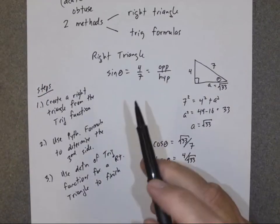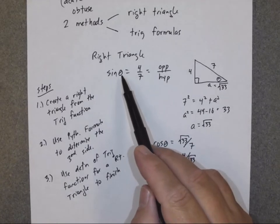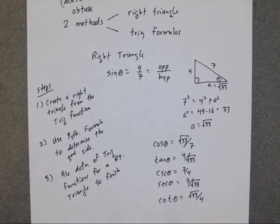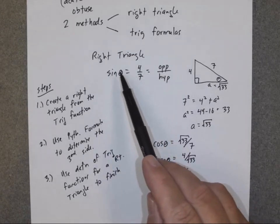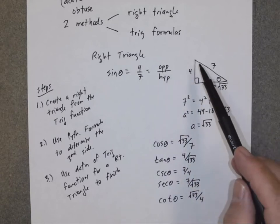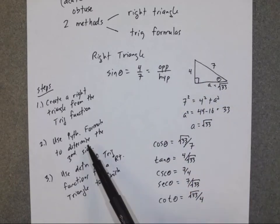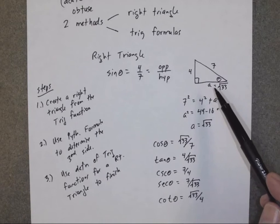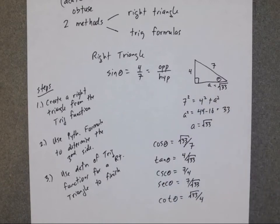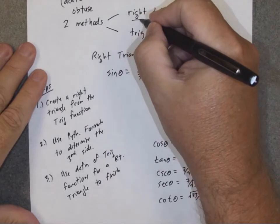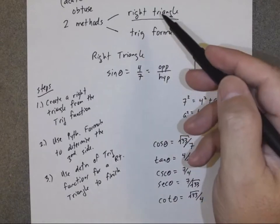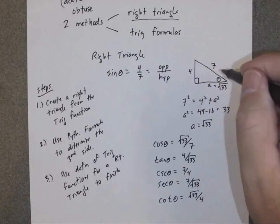Reviewing quickly: we were given an acute angle theta where sine of theta was 4 over 7, and we were to find the rest of the trig functions. Based on the definition of sine, we created a right triangle and filled in two of the sides. Then we used the Pythagorean formula to find the third side. Once we had all three sides of the triangle, we applied all the definitions of the trig functions. This is the right triangle method, and it's the one I prefer to use.